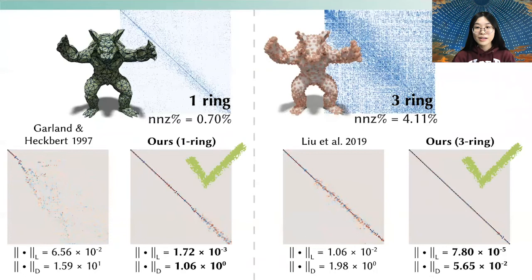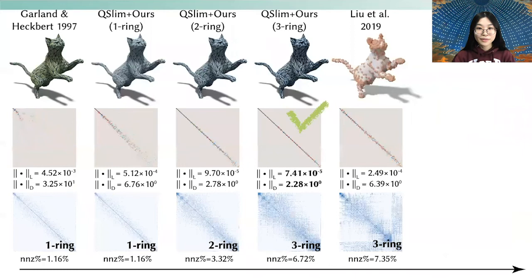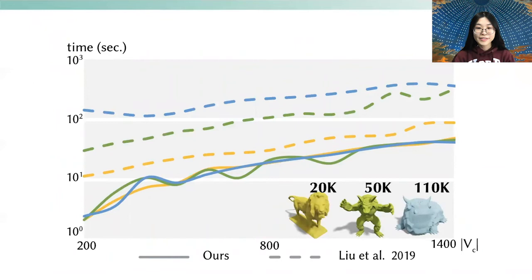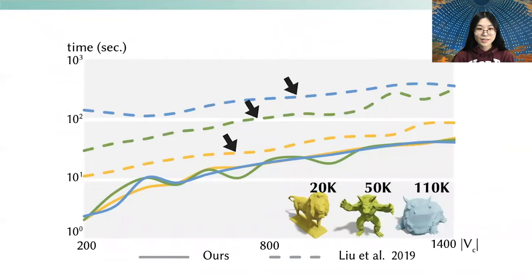Our optimization scheme enables users to freely choose between the 1-ring and 3-ring sparsity patterns. In contrast, Liu 2019 allows only the 3-ring sparsity pattern and introduces a significant amount of fill-in. With sparsity control, we can balance between spectral accuracy and the cost of application. Increasing non-zeros in the sparsity pattern allows more degrees of freedom, enabling our solver to converge to a better result. We also show that our ADMM solver can coarsen a high-resolution operator efficiently, while gradient descent in Liu 2019 takes longer to converge, since in our formulation the linear solve in ADMM is independent of the resolution of the original mesh.